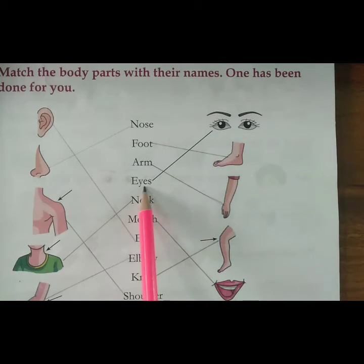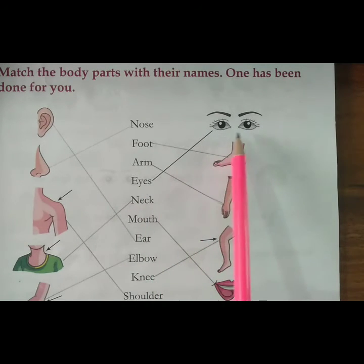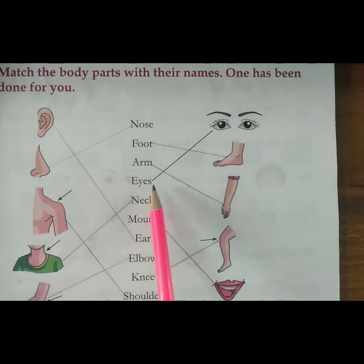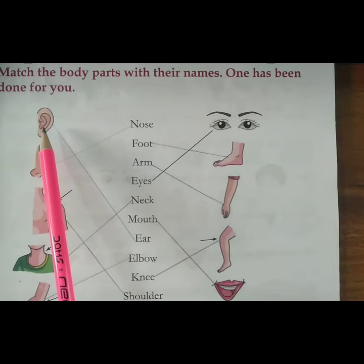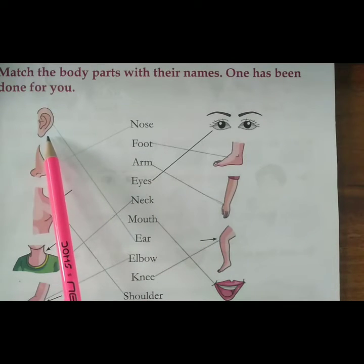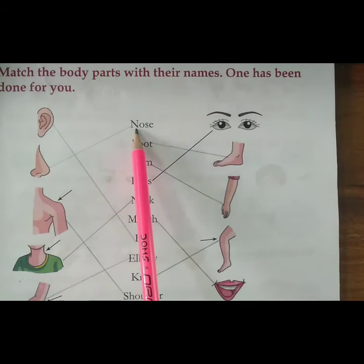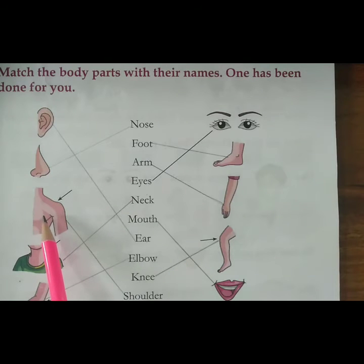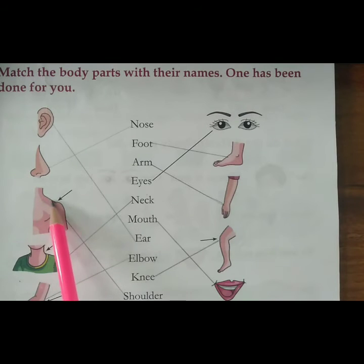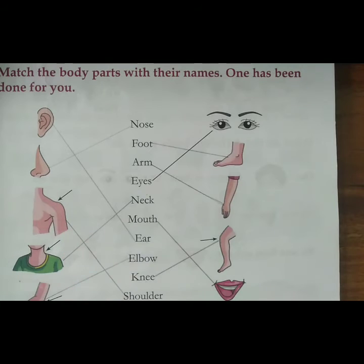Ek aapke liye yahan par karke de rakha hai. It is a picture of eyes — they have already matched it with eyes. Now come to the next side. First picture is ear — you have to match it with ear. Second picture is nose — so you have to match it with nose. Third one, the arrow is showing the picture of shoulder — so you have to match it with shoulder.